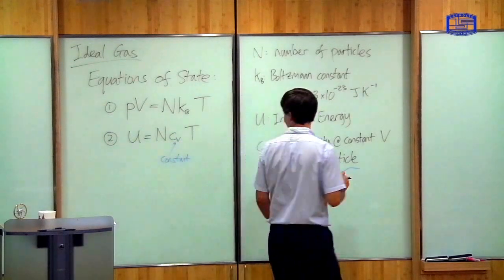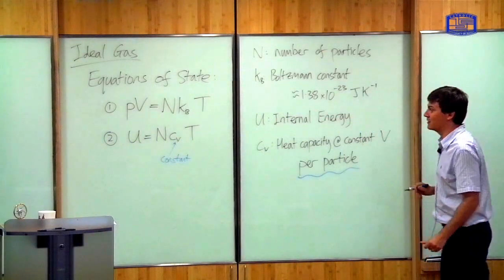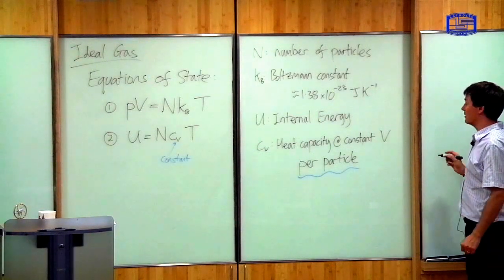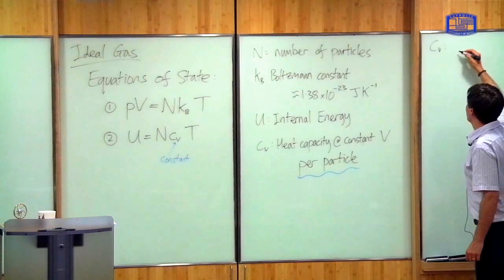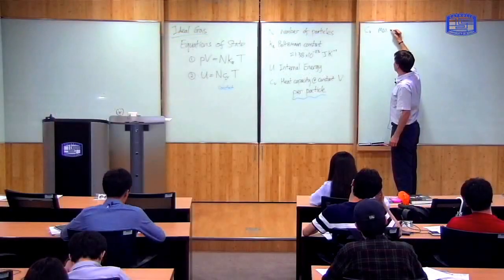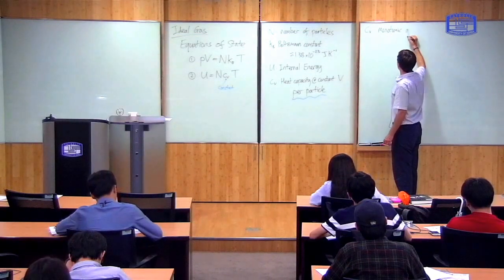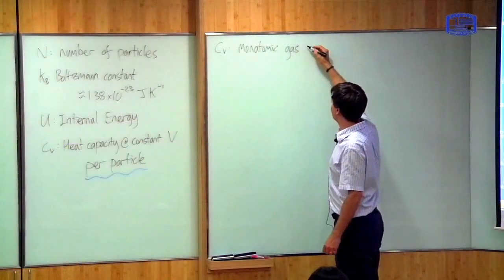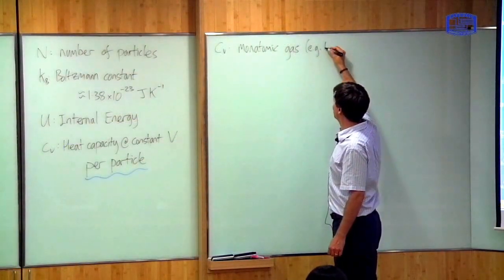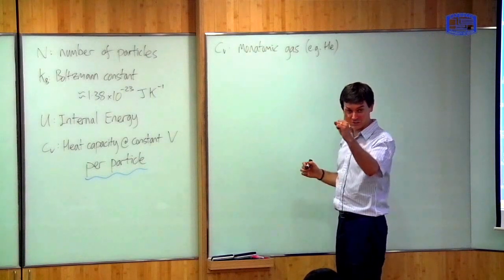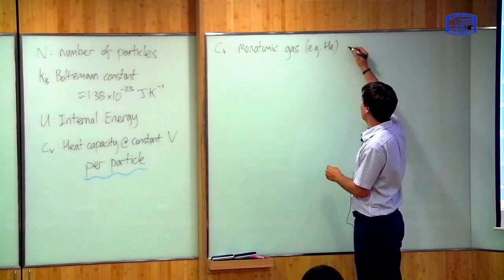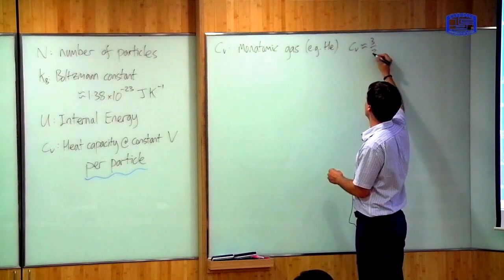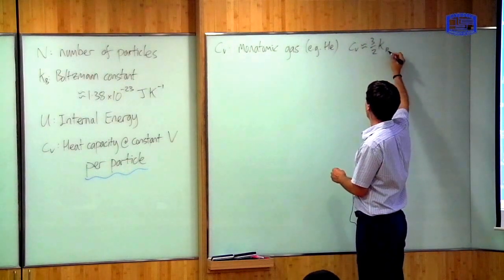That defines these two equations exactly. The Boltzmann constant has been found experimentally to have a value of approximately 1.38 × 10⁻²³ joules per Kelvin. CV itself, for most gases, has quite a simple value. If you take a monatomic gas — something like helium, where there's only one atom in each molecule — then to a very good approximation, CV is approximately 3/2 times the Boltzmann constant.